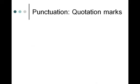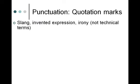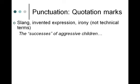Looking at quotation marks: use double quotes when using slang, an invented expression, or trying to convey a sense of irony — but not for technical terms. For example, 'the successes of aggressive children' — putting quotes around 'successes' conveys irony, since getting lunch money isn't really success in the long run. That would be an appropriate use. But if you characterize some children as having a 'disorganized, defiant attitude' — even if it's an invented expression — it's a technical term, so it doesn't get quotes. That's APA for you.